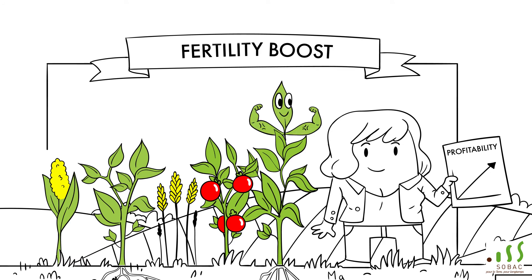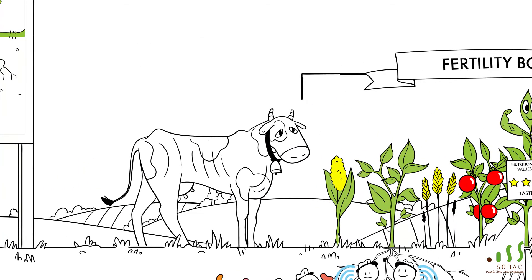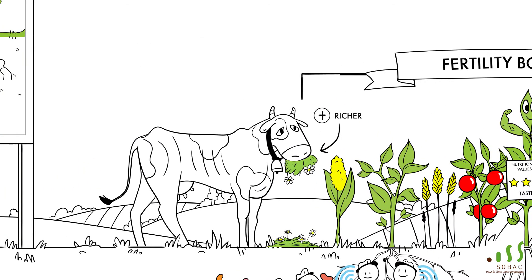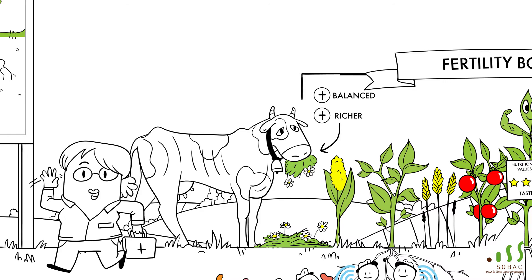Plants are stronger. They have better nutritional values. Thus, animals are offered self-produced, richer and more balanced forage and quality production, which reduces veterinary costs and improves the health of the animals.